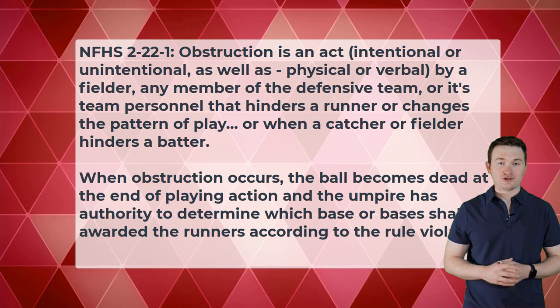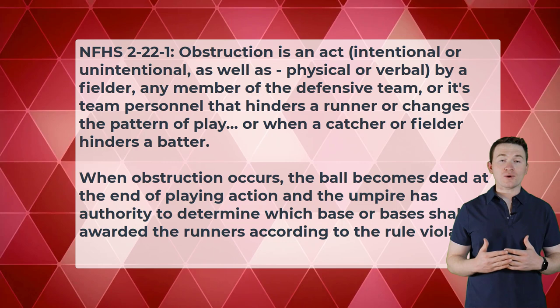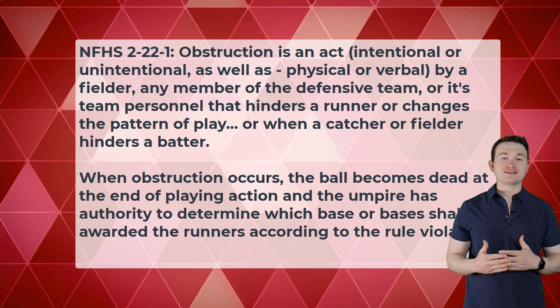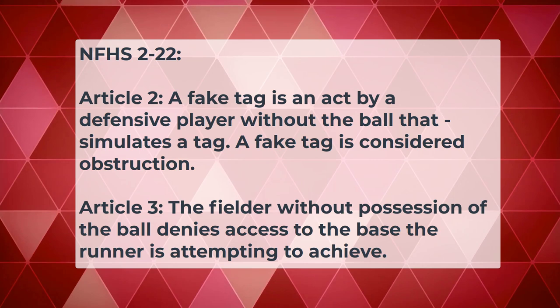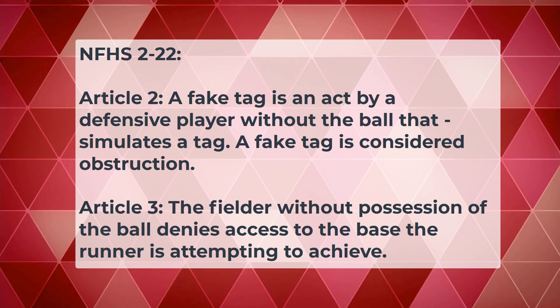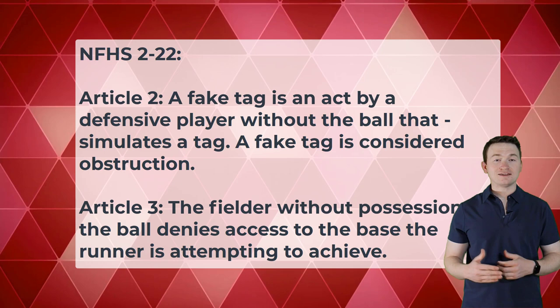The third main point from Article 1 is that obstruction is always a delayed dead ball in high school rules. We're never going to kill play in order to enforce an obstruction penalty. Article 2: a fake tag is an act by a defensive player without the ball that simulates a tag — a fake tag is considered obstruction. Article 3: the fielder without possession of the ball denies access to the base the runner is attempting to achieve. Fake tags are against the rules and are considered obstruction, and a defensive player cannot block a base without the ball.